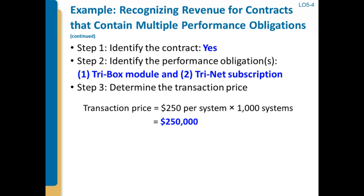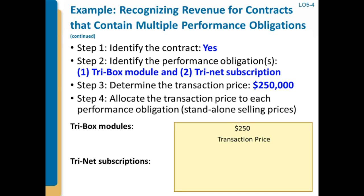We're going to spend time later in this discussion on how step three can get much more complicated. Then step four: now we have to allocate that transaction price to the performance obligations, and we do that based on their standalone selling prices.